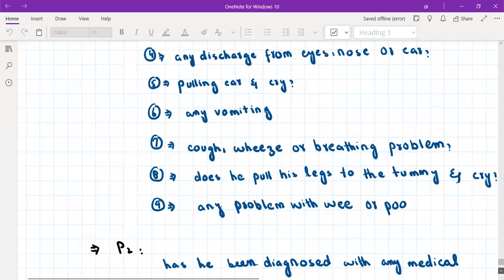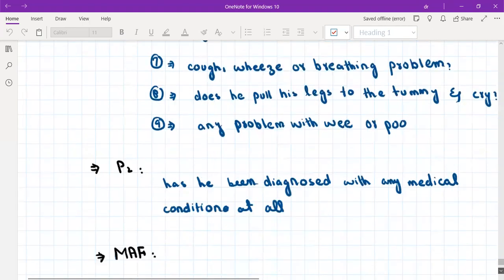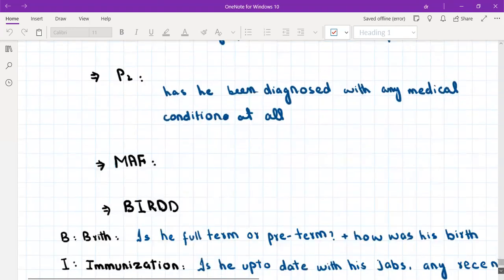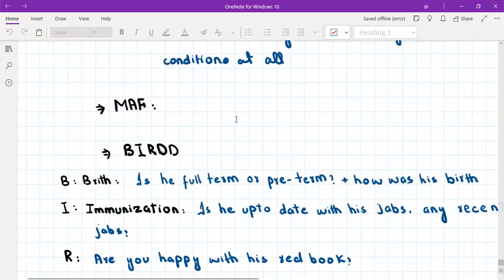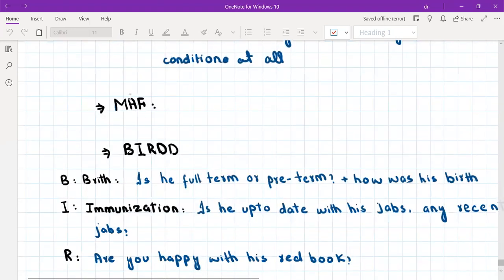Then past medical history, we'll ask about any medical condition that the patient is having. So has he been diagnosed with any medical condition at all? Then, any medications that the child is on, any allergies and any family histories. For family history will ask, does he have any other siblings, any medical condition that the siblings are having that runs in the family? Okay. And then we have the BIRD questions. The BIRD questions are also unique to the pediatric history. Okay.